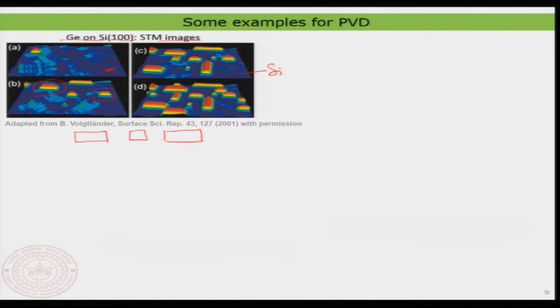As the coverage increases, different types of rectangles form and they form in two different directions — one direction like this, another direction like this. The height of the islands is also increasing; it is not just a monolayer of germanium on top of silicon, but many many layers of germanium are getting deposited on top of the silicon surface.